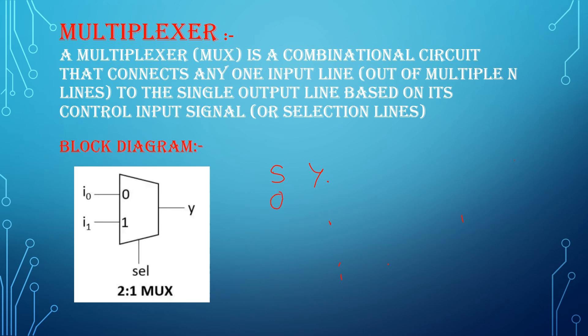So s is equal to 0, I0 is connected to y. If s is equal to 1, I1 is connected to output. And this is the truth table.